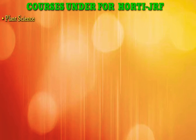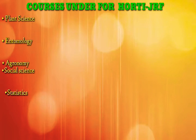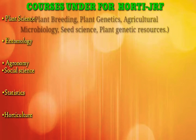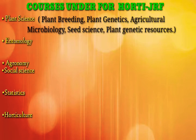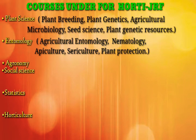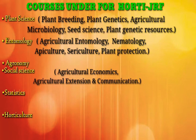There are many branches in Horticulture for JRF preparation, such as plant science, entomology, economics, social science, statistics, and horticulture. Under plant science: plant breeding, plant genetics, agricultural microbiology, seed science, and plant genetic resources are included. Under entomology: agricultural entomology, agricultural nematology, apiculture, sericulture, and plant protection are included. Under social science: agricultural economics, agricultural extension, and communication are included.